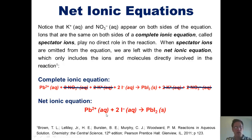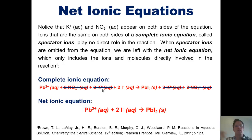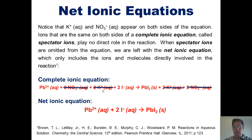The other ions — the nitrate and the potassium — as soon as you throw them in the water, they just dissolve out into the water. They never get together to form a precipitate, because any time they attempted to get together, they would just re-dissolve, since they form a compound that is completely soluble in water.